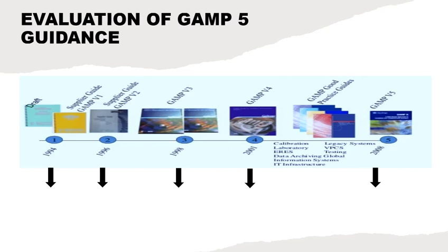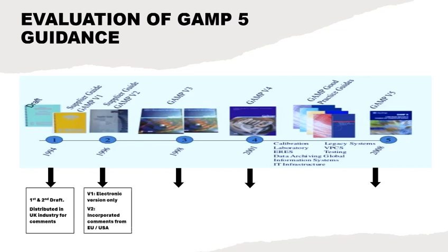In this slide we will discuss about the evolution of GAMP5 guidance. In 1994, the first and second drafts were made for GAMP5 guidance and were distributed in the UK industry for industry expert comment. In late 1995 and early 1996, GAMP version 1 and version 2 were published. Version 1 was published in electronic format only, and version 2 was incorporated and distributed in the Europe and USA market for industry expert comments.